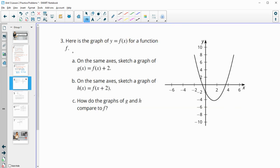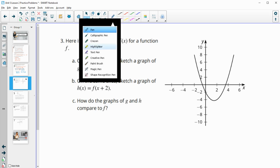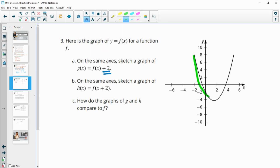Number three, here's the graph of F of X, or Y equals F of X. So on the same axis, sketch G of X so that it's F of X plus 2. So this is going to be this exact same function here. So it's going to be this exact same function, but it's going to be 2 higher.